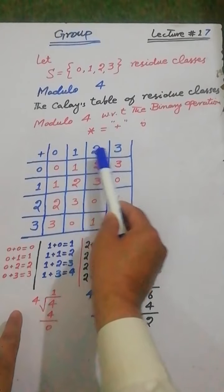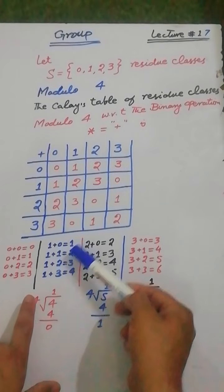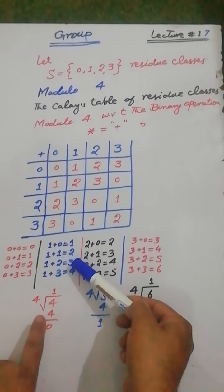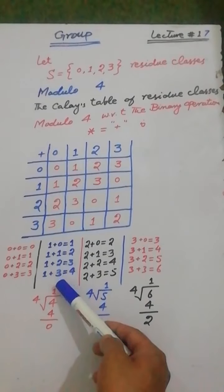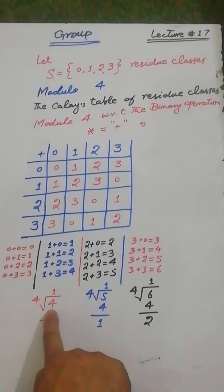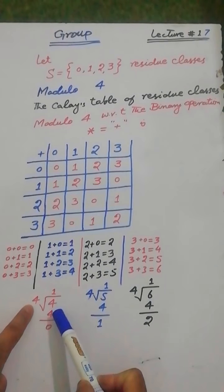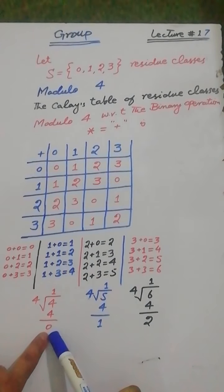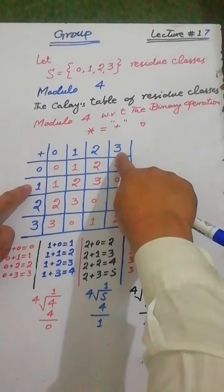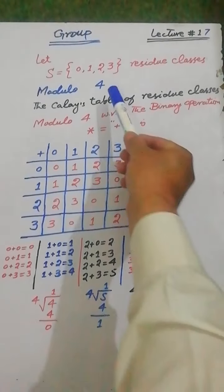Now add 1 to each element of the set S, where 1 is also an element of S. 1+0=1, 1+1=2, 1+2=3 — all less than 4. For 1+3=4: since 4 divided by 4 gives remainder 0, we write 0 in the table according to the residue classes modulo 4 rule.